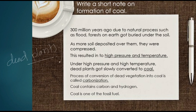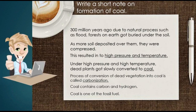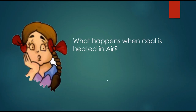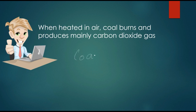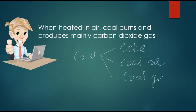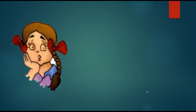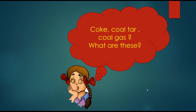What happens when we burn coal in air? When coal is burnt in air, it converts into carbon dioxide because it is carbon. Carbon plus oxygen gives rise to carbon dioxide. Coal is also used to make coke, coal tar, and coal gas. What are coke, coal tar, and coal gas? We shall deal with this in the next video.